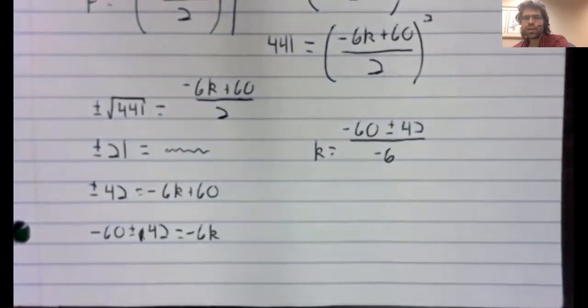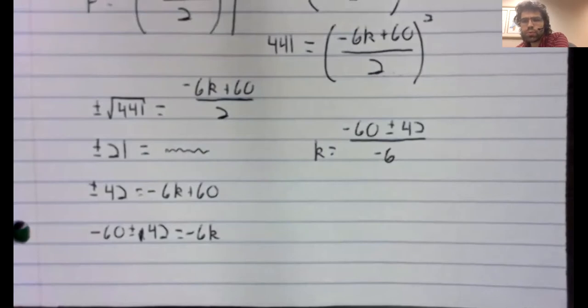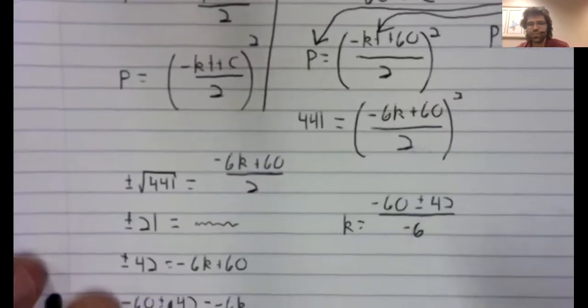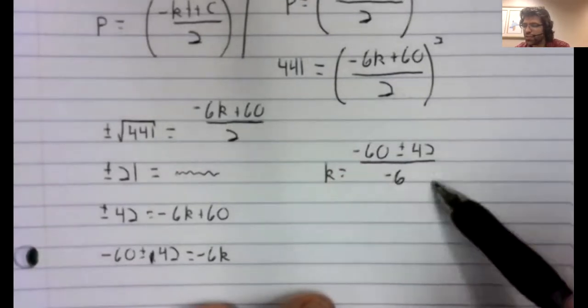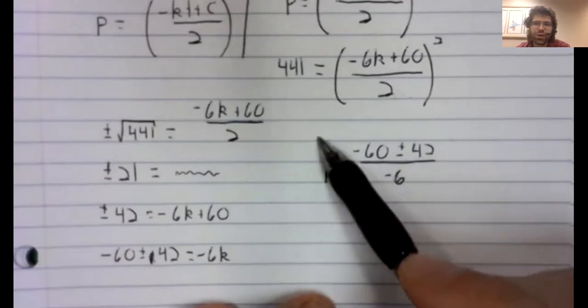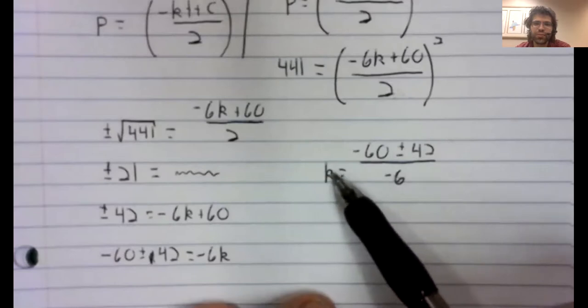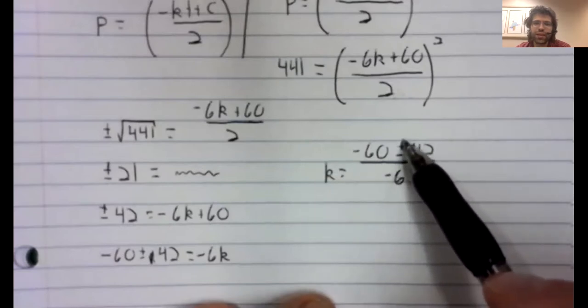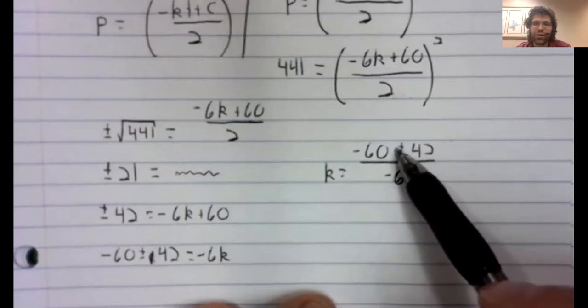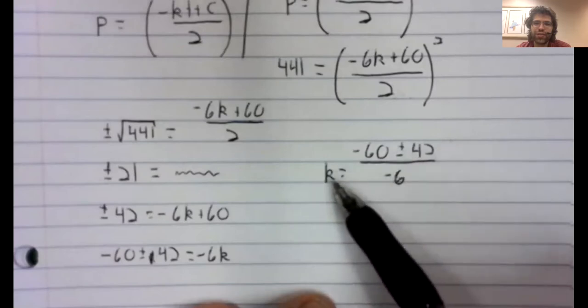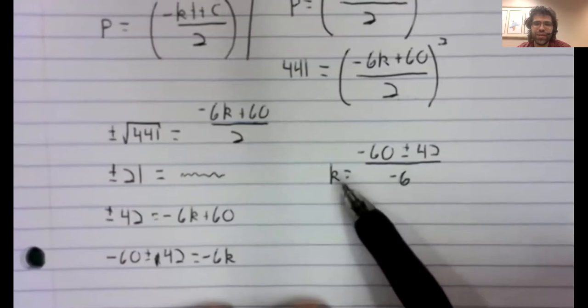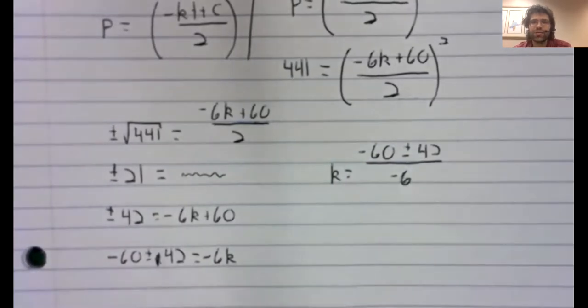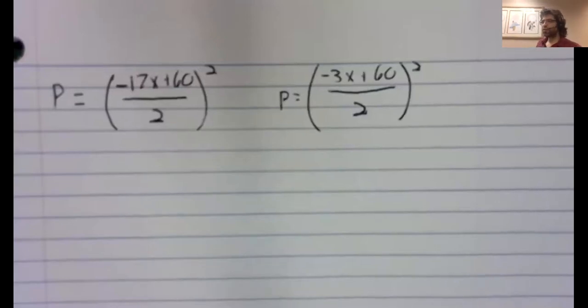And finally, we solve for k. I was about to happily tell you that because k has to be positive, we know whether we have a plus or minus sign here. That is not correct. Either positive or negative here gives us a positive k. So we're going to have to do a little more work after all. Here are our candidates.